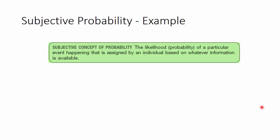So subjective probability is the likelihood of a particular event happening that was assigned by an individual based on how much information the individual has. Here, information doesn't mean external alone—the knowledge, understanding, expertise, etc.